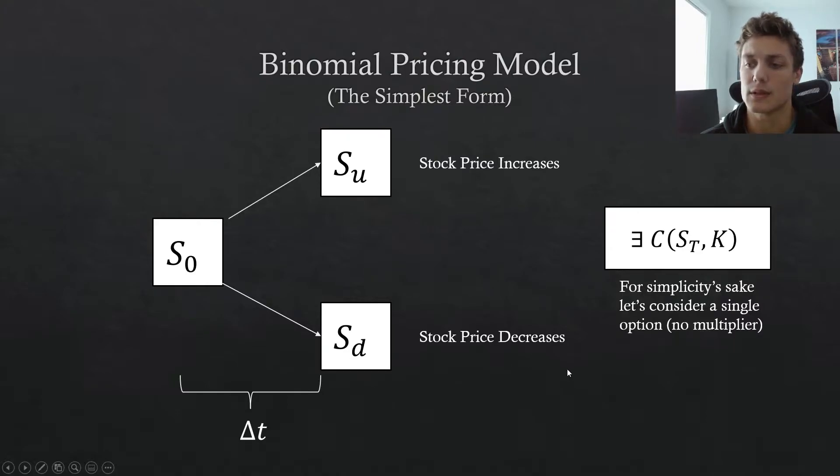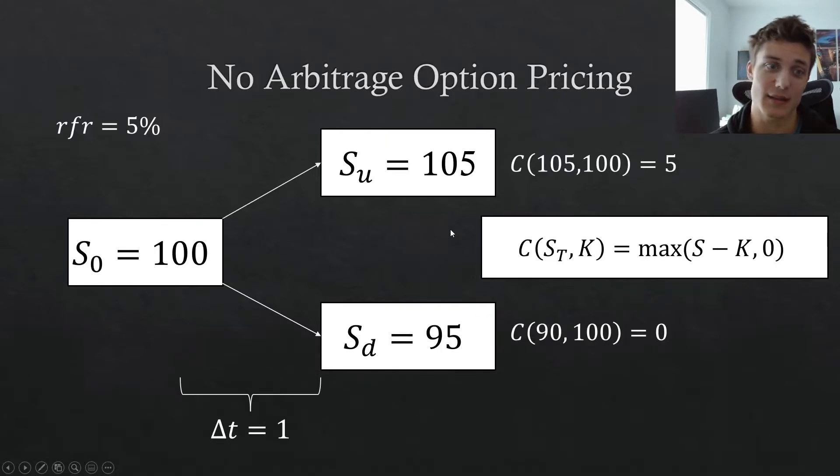And then we're also going to assume that there's going to exist a call option where we can derive the value at this terminal step. So pretty much what I'm saying is we're going to pick a strike price and we're going to be able to evaluate this call option at expiration, where the expiration is going to be predefined by this delta t here. This will probably make a lot more sense once we tie values to each of these quantities. So let's just do exactly that.